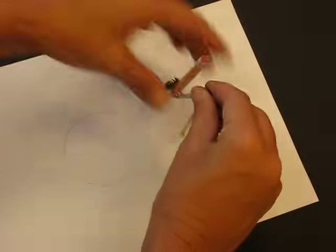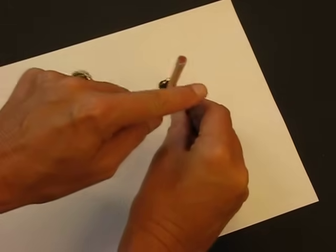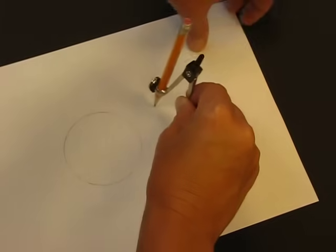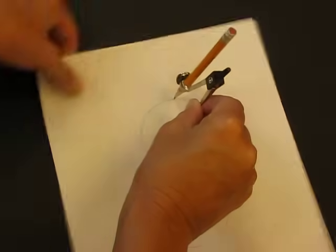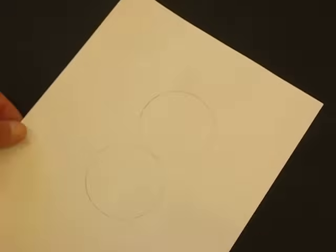But for those of you that are new to this, I would hold the point down and bring my pencil around. And actually, by just holding the point down, I can just turn my paper. And there I have drawn two circles.